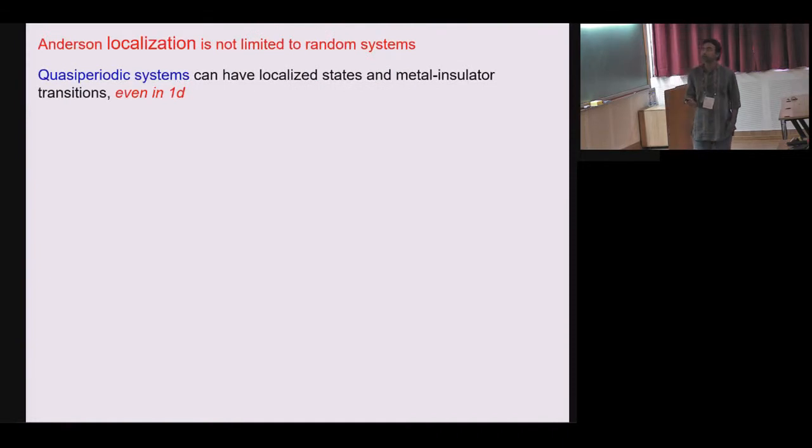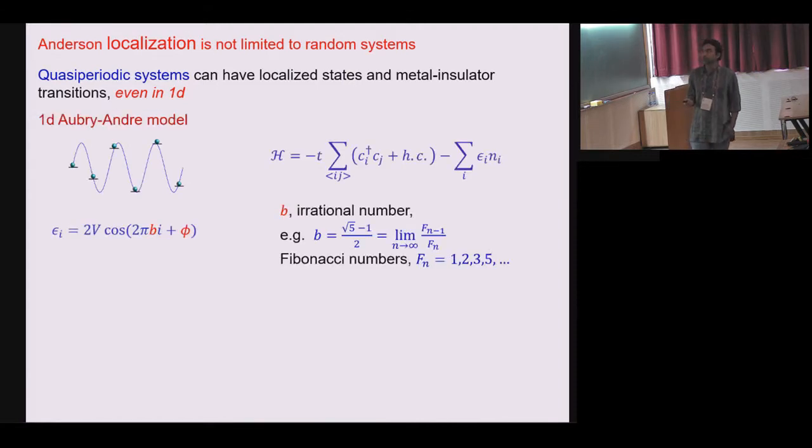Now however this Anderson localization is not only limited to random system and that's where our interest comes. There has been lot of work on quasi periodic systems. These systems are special because they show localization but also show metal insulator transition, this transition even in 1 dimension. The famous example is this 1D Aubry-Andre model. You replace this disorder potential by a quasi periodic potential, for example cosine whose argument is determined by irrational number.